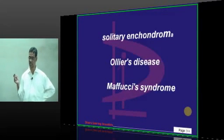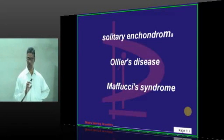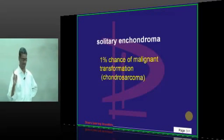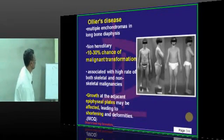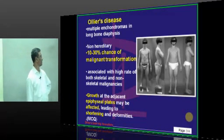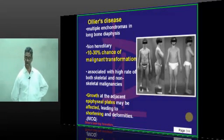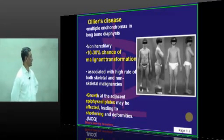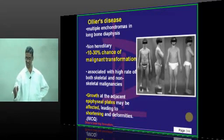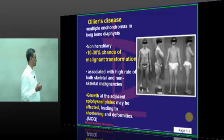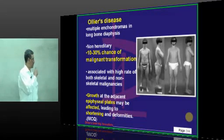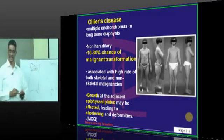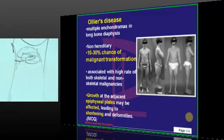There are three clinical entities: solitary enchondroma has a 1% chance of becoming malignant. Ollier's disease, which is multiple enchondromatosis in long bone diaphysis and is non-hereditary, has a 10 to 30% chance of malignant transformation. The growth at the epiphyseal plate may be affected, leading to shortening, as the growth plate may be damaged if the tumor expands.